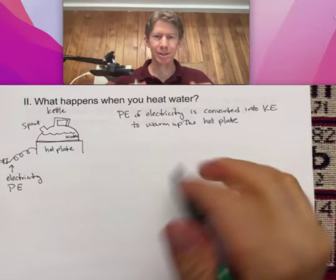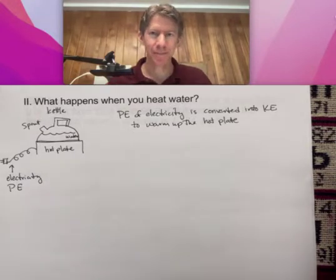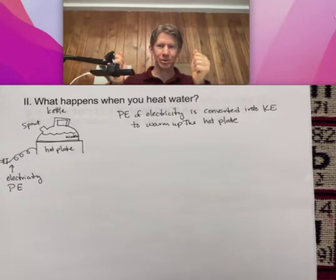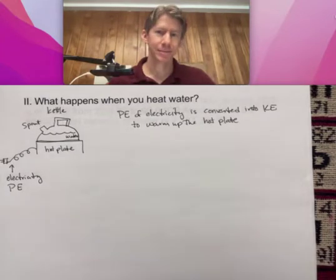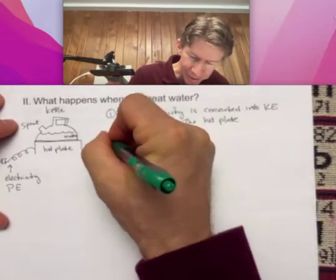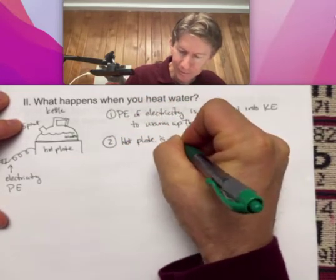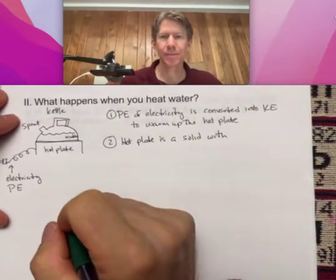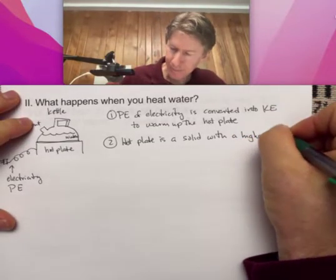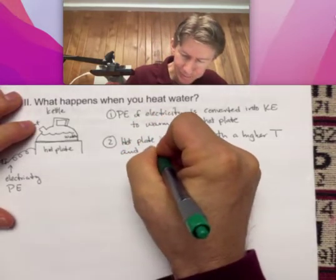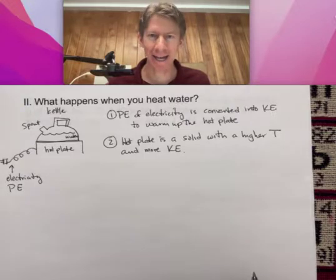We know that it's potential energy because we have charges. You could do it with your wall, but you could also do it with a battery. Batteries are storage places where when you recharge your battery, they separate charges; when you use your battery, the charges come together and use up that potential energy. So the hot plate is a solid with higher temperature and more kinetic energy, but it's a solid — it's not moving. So how does a solid have kinetic energy?